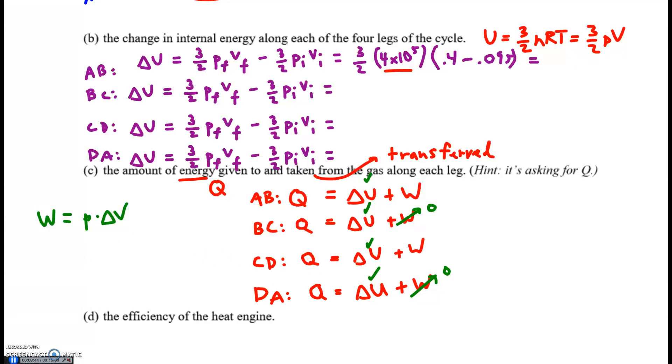We can actually calculate work with this formula if pressure is constant, and it is for both of these scenarios. So this work for AB is just going to be the constant pressure, 4 times 10 to the 5th, times the change in volume. We end at the higher volume and start at the smaller volume, 0.4 minus 0.095. Likewise for CD, that's the line that happens lower down on the graph, pressure 2 times 10 to the 5th. We end at 0.095 and start at 0.4, so it's going to come negative.